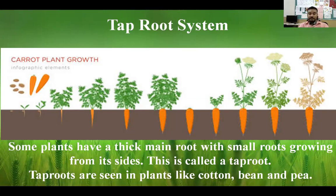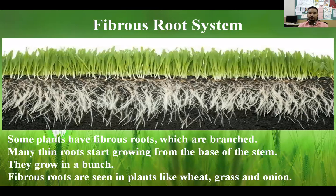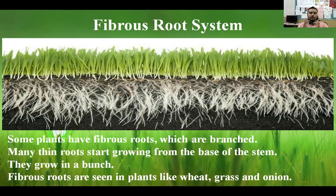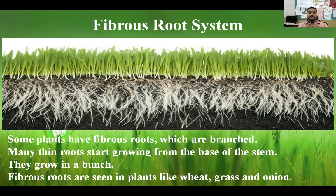The second root system is called the fibrous root system. Some plants have fibrous, meaning hairy, roots. In fibrous roots, many small thin roots grow in a bunch from the base of the plant. This kind of root system can be seen in plants like wheat, grass, and onion — you might have seen onion with a bunch of roots at the bottom.